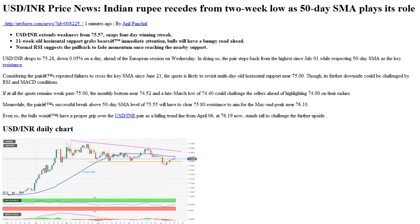Though its further downside could be challenged by RSI and MACD conditions. If the quote remains weak past 75.00, the monthly bottom near 74.52 and a late-March low of 74.40 could challenge the sellers, ahead of highlighting 74.00 on their radars. Meanwhile, the pair's successful break above the 50-day SMA level of 75.55 will have to clear 75.80 resistance to aim for the May-end peak near 76.10.